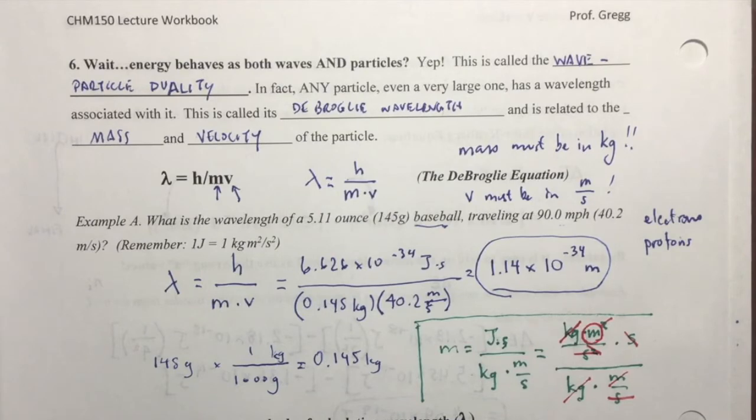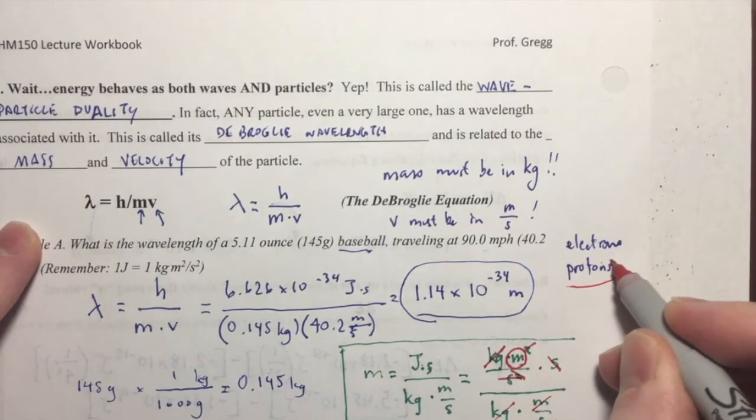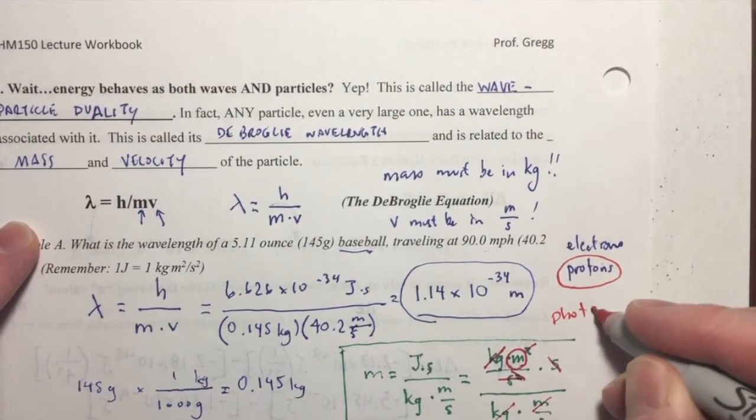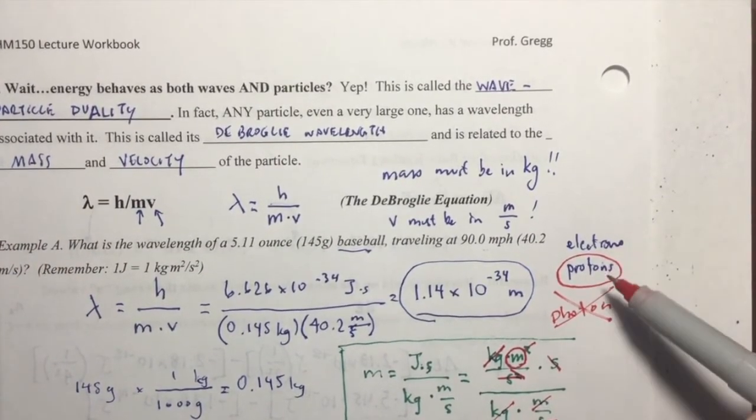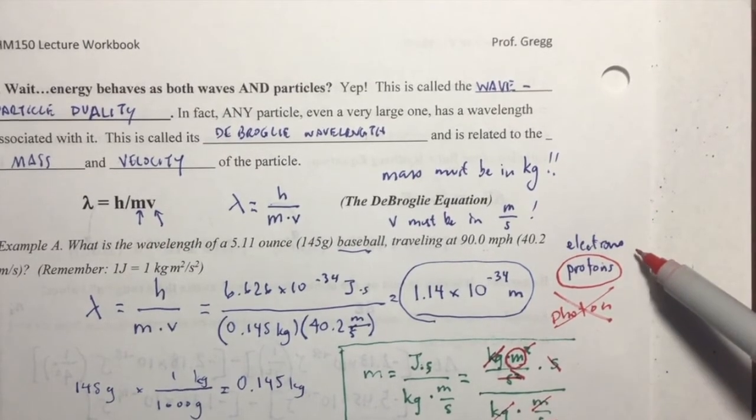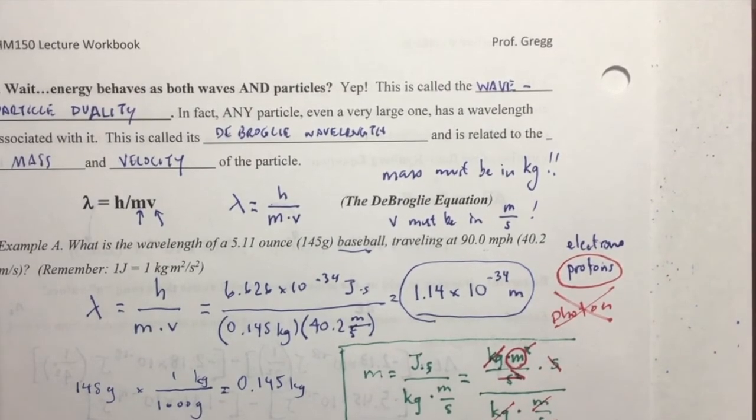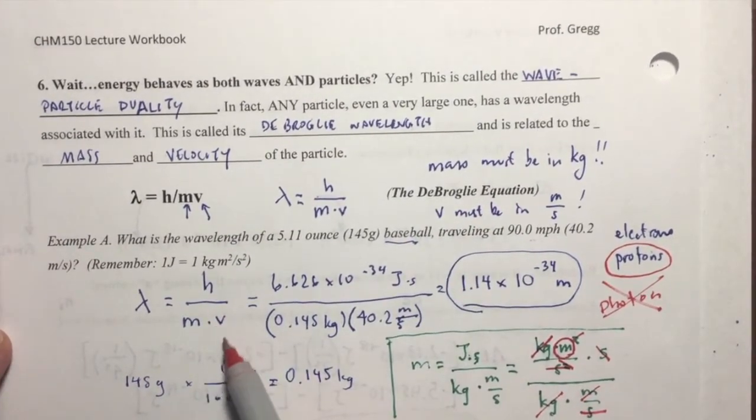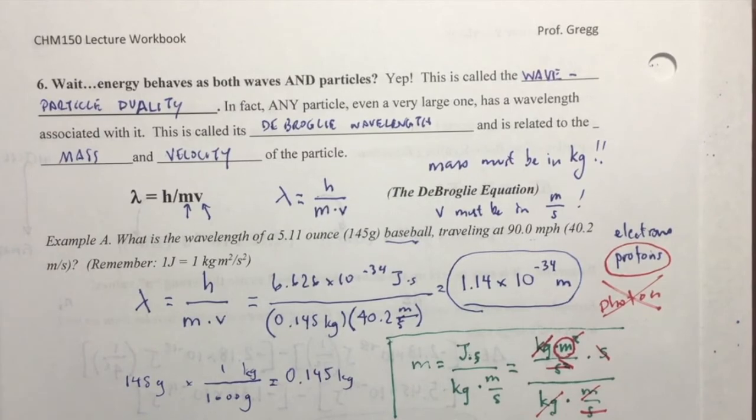Okay. So, that's an example of calculating a de Broglie wavelength. And again, if you're being asked to calculate the wavelength of a particle, like a proton or an electron, this is not a photon. Photons are not considered particles with mass. But a proton or an electron, and you have the mass and the velocity of those particles, then the wavelength you're going to calculate is going to be the de Broglie wavelength. Okay. So, notice that I am not using c equals lambda nu in this equation.